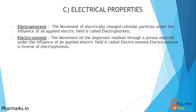Moving to electrical properties. Electrophoresis is the movement of electrically charged colloidal particles under the influence of an applied electric field. Colloidal particles have an electrical double layer around them. As we go from coarse particles to colloidal particles, applied energy is converted into an electrical double layer, and this property is used for electrophoresis. Electrophoresis is better observed in the colloidal range.